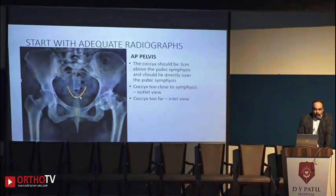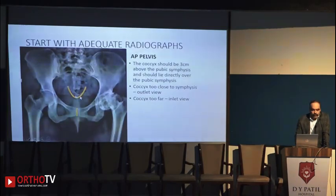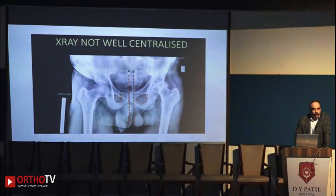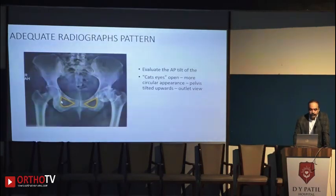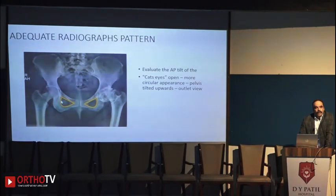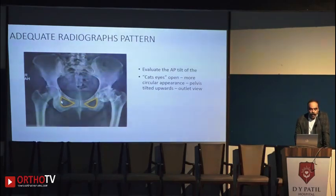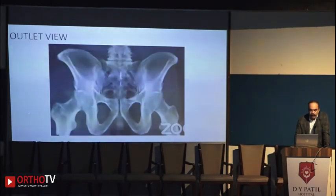An ideal X-ray is one where the pubic symphysis is in line with the coccyx. Any deviation or poorly centralized X-ray will show the long axis of the pubic symphysis and sacrum not in the same line. If the obturator foramen looks like cat eyes and the distance between the pubic symphysis and coccyx is more than 3 centimeters, that is an inlet view. In the outlet view, you have a large obturator foramen and you do not see the coccyx at all.